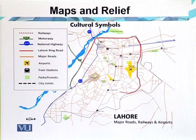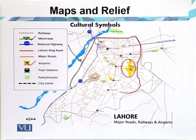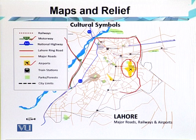Here the symbol in yellow color shows the location of the airport. The line in green color shows the motorway which passes through the Ravi River moving toward Islamabad. These are cultural features. Cultural symbols on the map are very important as they give a picture of man-made features.